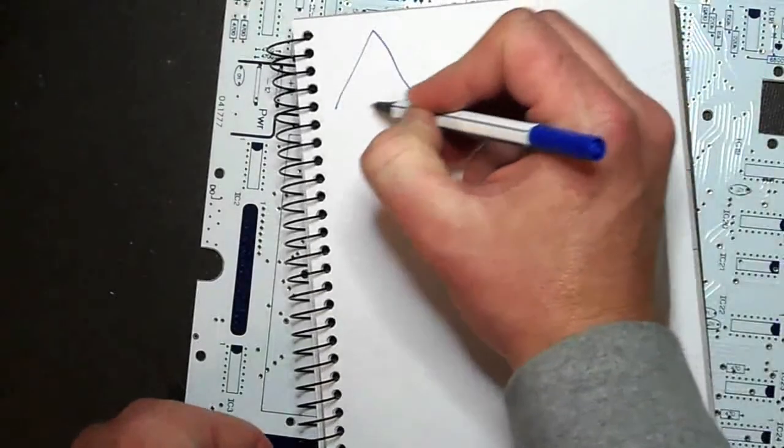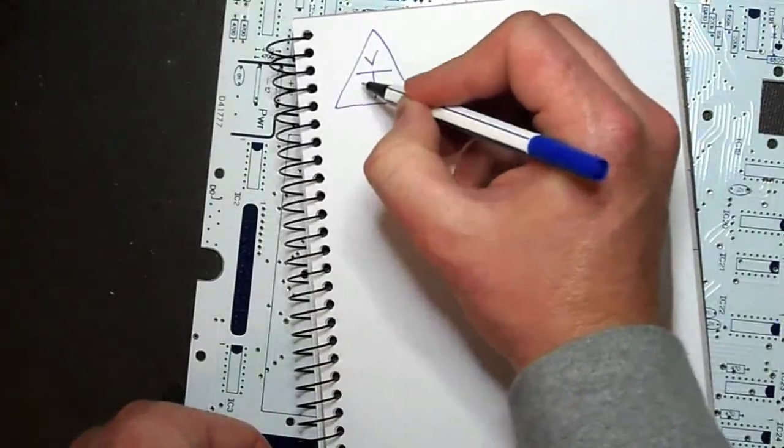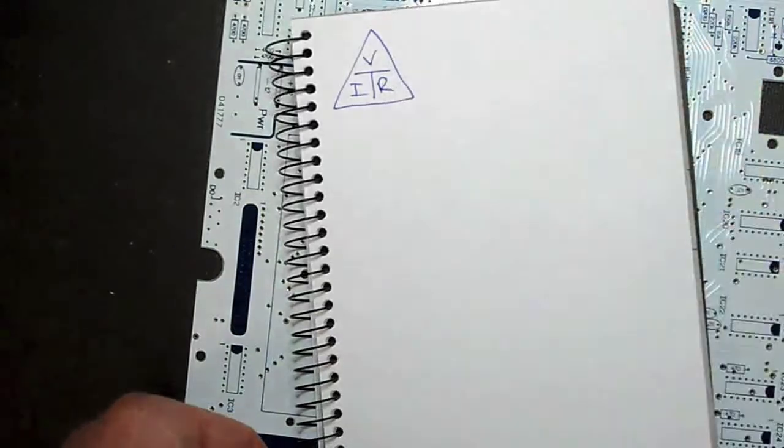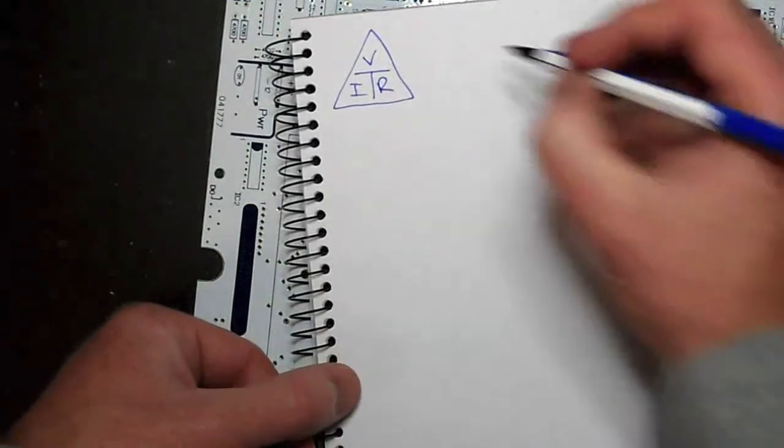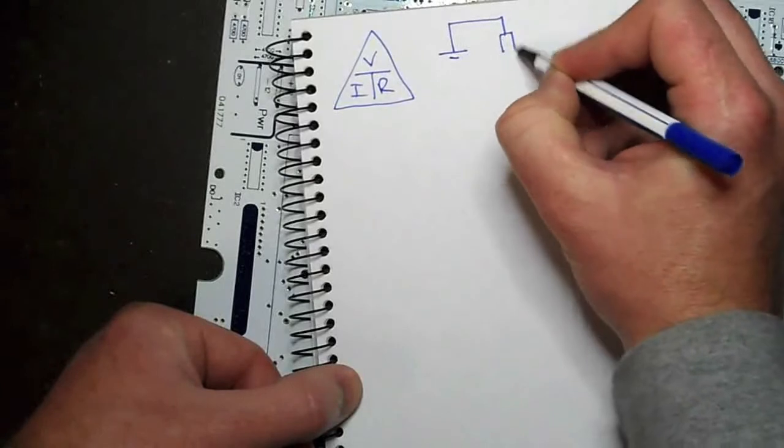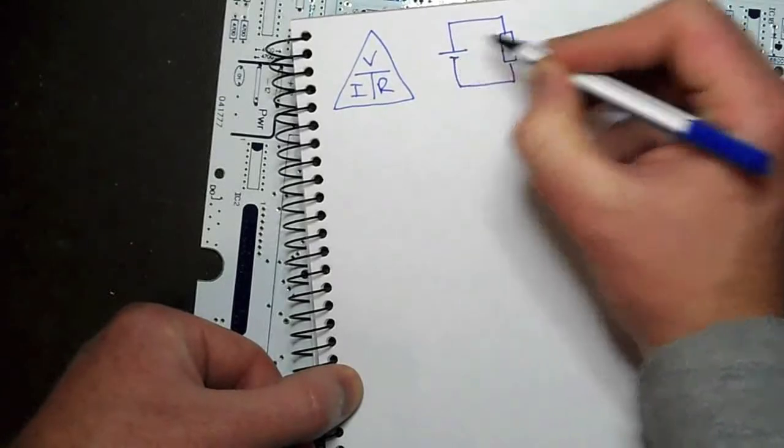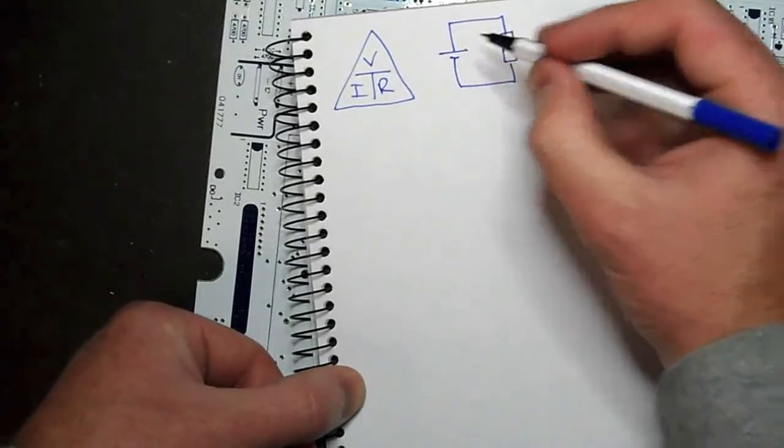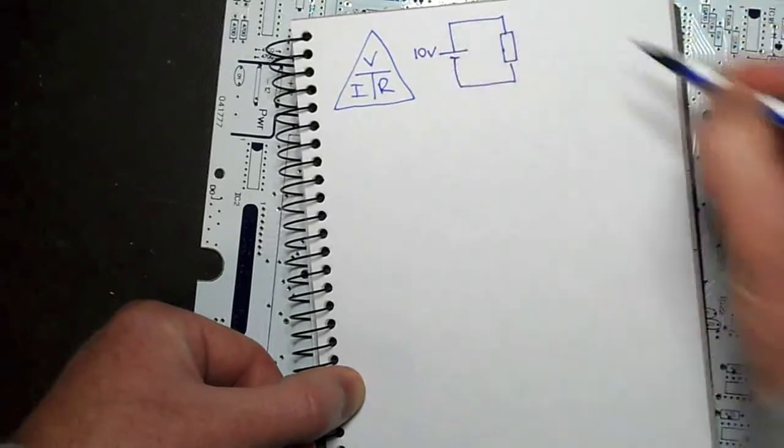Let's put this into practice. Here, I've just repeated our Ohm's Law quick reference triangle. And now I'll draw up a simple circuit, comprising of a battery, negative down the bottom, positive up the top. And let's make it 10 volts.